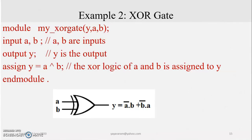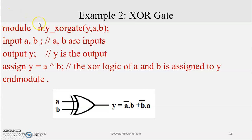Let me take another example: an XOR gate. As you know, the XOR gate has two inputs A and B, and the output Y is equal to A-complement AND B plus B-complement AND A. We use the logical XOR symbol in the assign statement. The first part is the keyword 'module,' followed by the name of the module 'my_XOR_gate,' which also indirectly indicates the module.